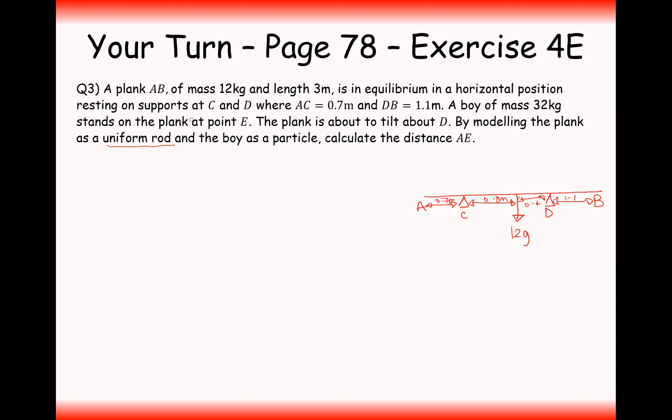A boy of mass 32 kilograms stands at point E. The plank is then on the point of tilting around the pivot D. So therefore, C is useless. By modelling the plank as a uniform rod and the boy as a particle, calculate the distance from A to E. Well, if all the forces are centred around D, then the boy must be standing at a point around this position here. We'll call the distance from D to E the value X, and then we'll add on 0.7, add 0.8, add 0.4.